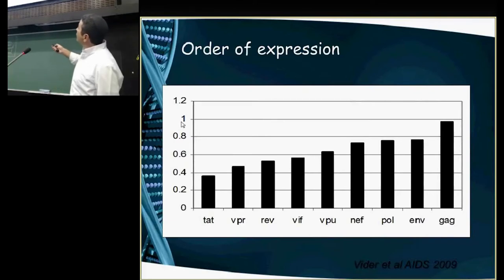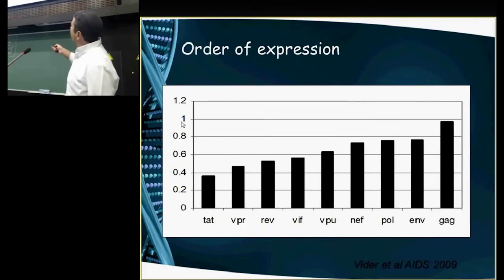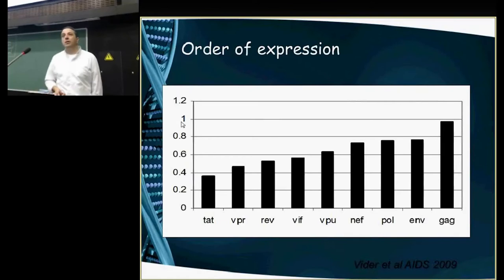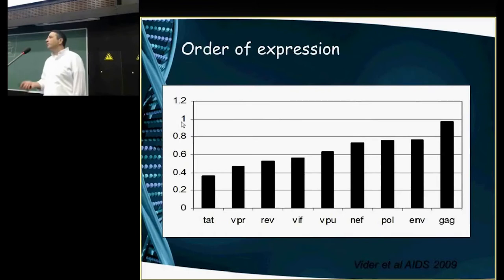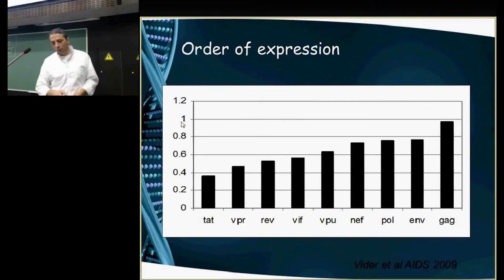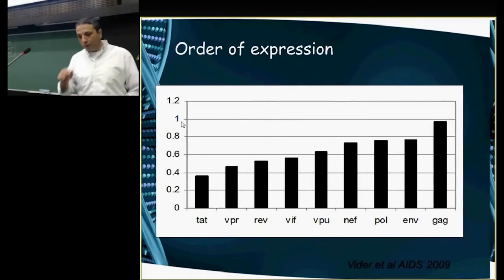That's the ratio between the expected and observed number of epitopes. TAT, VPR, and REV have very few. As you go through and increase all the way through the life cycle of HIV, it simply increases. Not only do they remove epitopes, they do it in a very smart way — they actually optimize the price they're willing to pay to remove epitopes compared to the price they lose from being detected by the immune response.